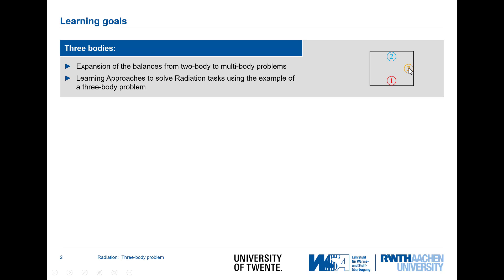Taking a third one into consideration really complicates the situation quite a bit, and we will start with two objects and then move on to a third one to understand how much more has to be considered and how it's going to be solved. The learning approach would be that you take this as a reference to solving future multi-object problems, and also understand how the easy-going assumptions help in solving the problem.